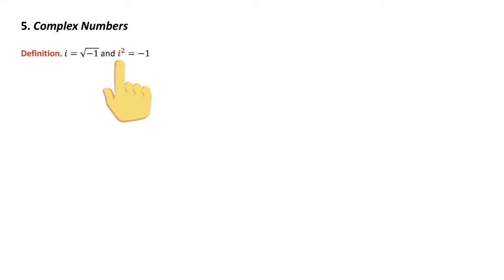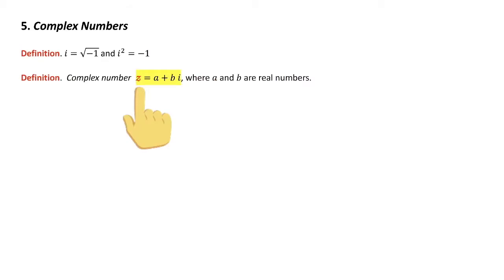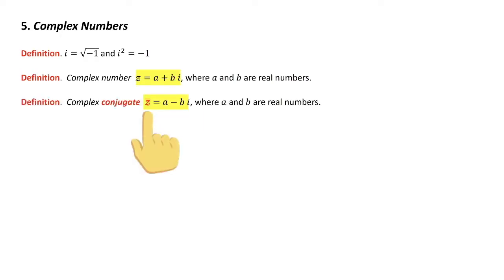You also have to define — and it's not obvious — that i squared equals minus one. So i is the square root of minus one, and i squared is minus one. That's going to come up through the course. A complex number — instead of calling it x, it's z — it has two parts: a real component and an imaginary component, where a and b are real numbers.